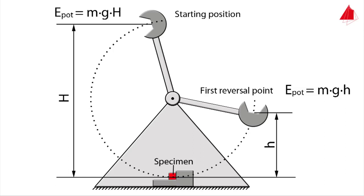The energy that has been absorbed by the specimen is called notch impact energy KV. It corresponds to the difference between the two potential energies.